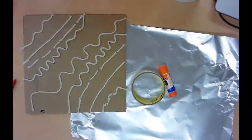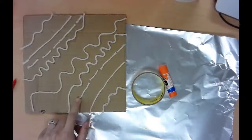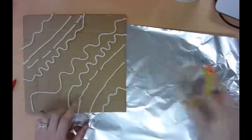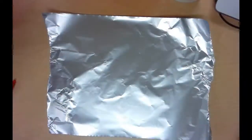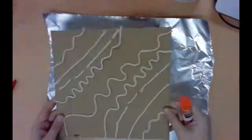Alright, so once you are done with your lines and gluing all of your yarn on your cardboard, we're going to do what's called a foil embossing. So you're going to need a piece of aluminum foil and you're going to need a glue stick and you're going to need your cardboard.